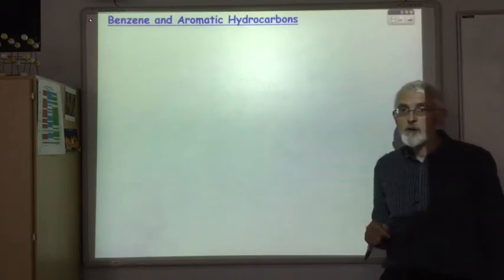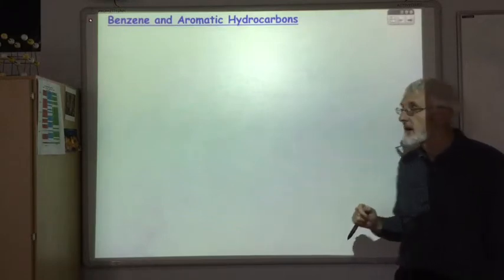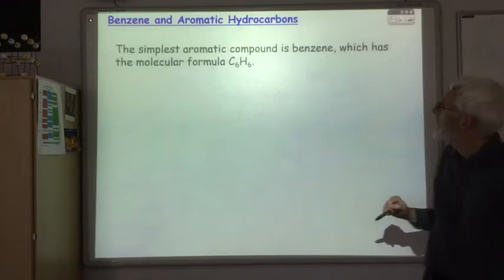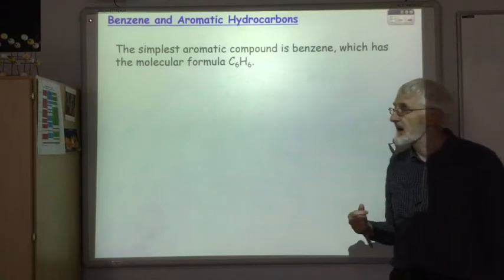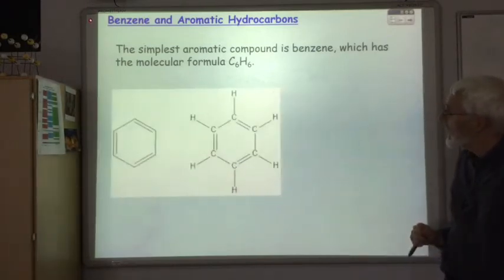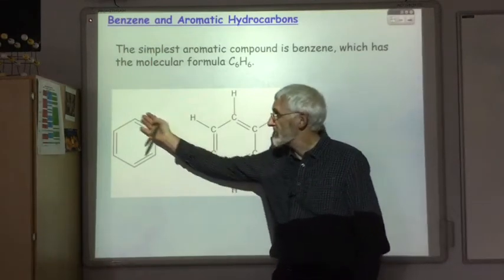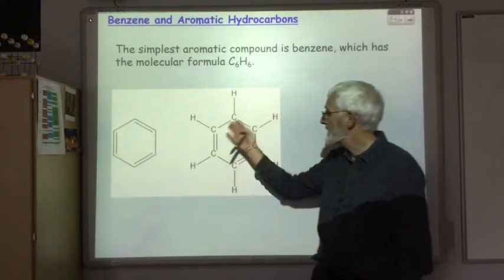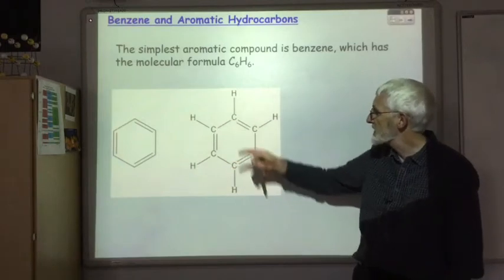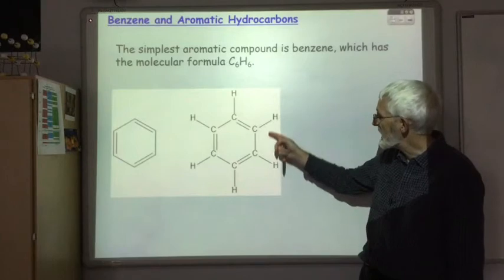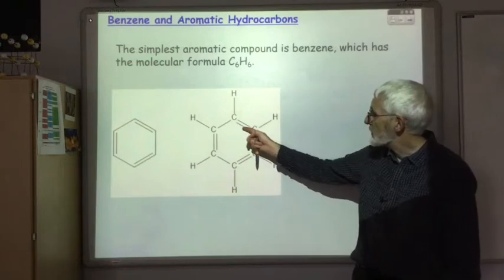Initially we're going to talk about benzene and aromatic hydrocarbons. Benzene has a molecular formula C6H6. The structure of benzene is sometimes shown in this format. This is the skeletal formula and this is the full molecular formula. So we have a ring of six carbon atoms. Each carbon is attached to one hydrogen, which isn't shown in the skeletal formula, and we've got alternating single and double bonds.